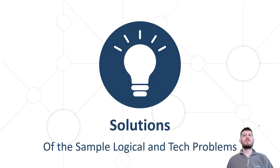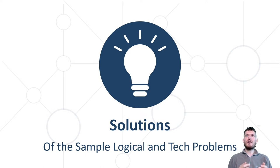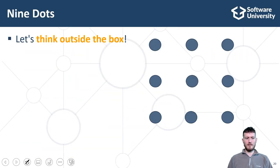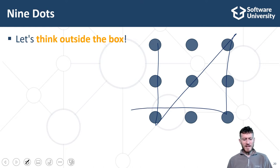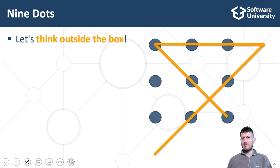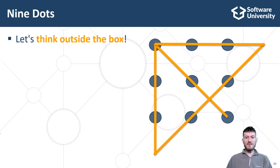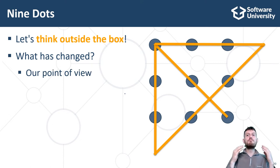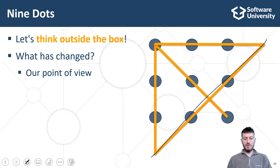Let's find solutions to the previously mentioned logical and technical problems. For the nine dots problem — connecting the dots using four straight lines — we need to think out of the box. The solution is to draw four lines where the ends of the lines extend outside of the area of the nine dots. It is allowed to place the ends of the lines outside of the points — it's not forbidden, but it's not obvious. Some logical challenges require creative thinking.